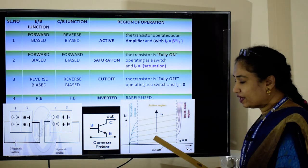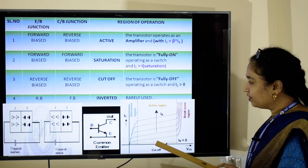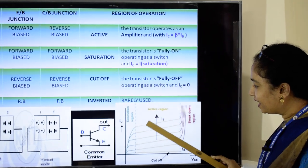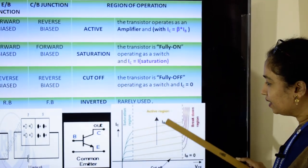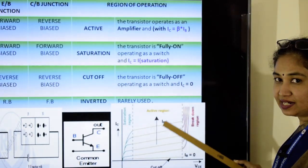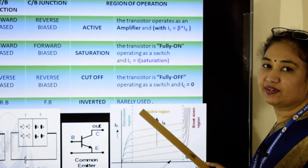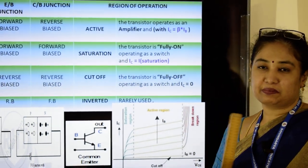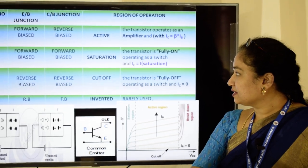You can see on the graph: the cutoff region, saturation region, and active region. To make the transistor work in the active region, the collector junction must always be reverse biased and the emitter junction must always be forward biased.